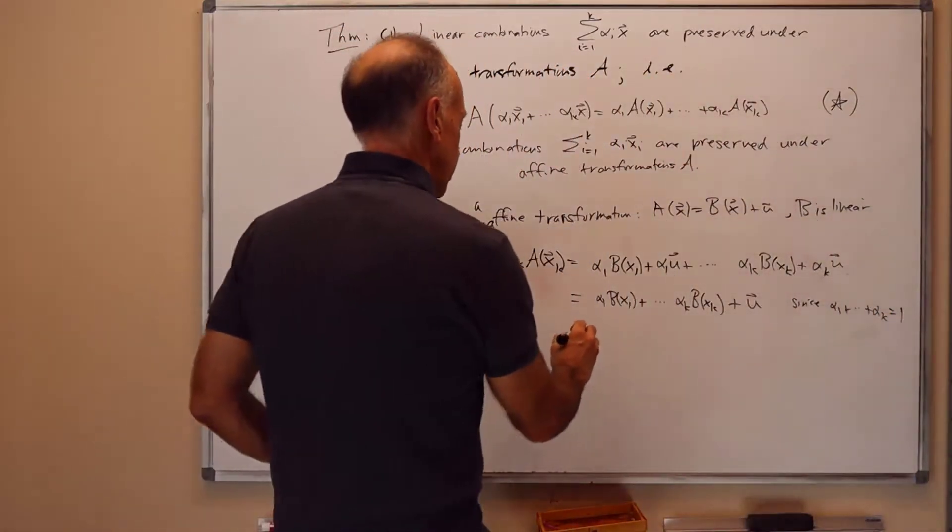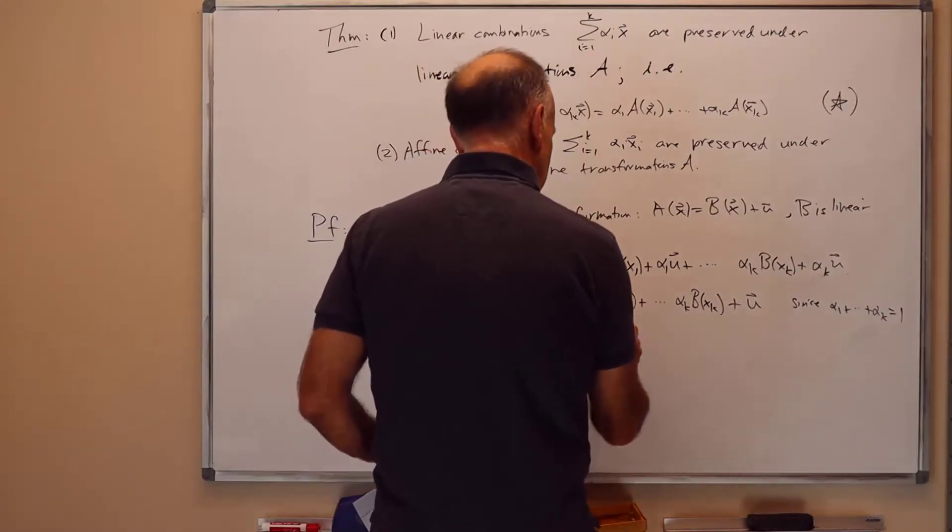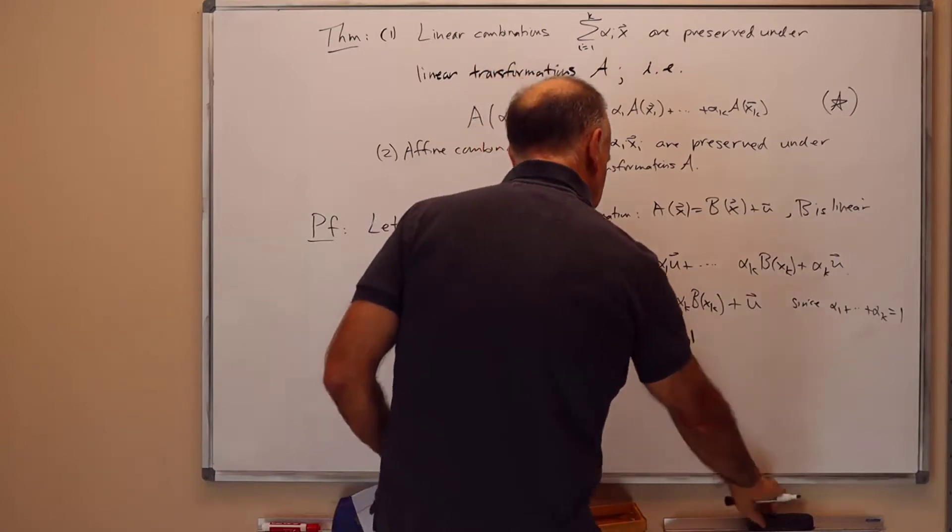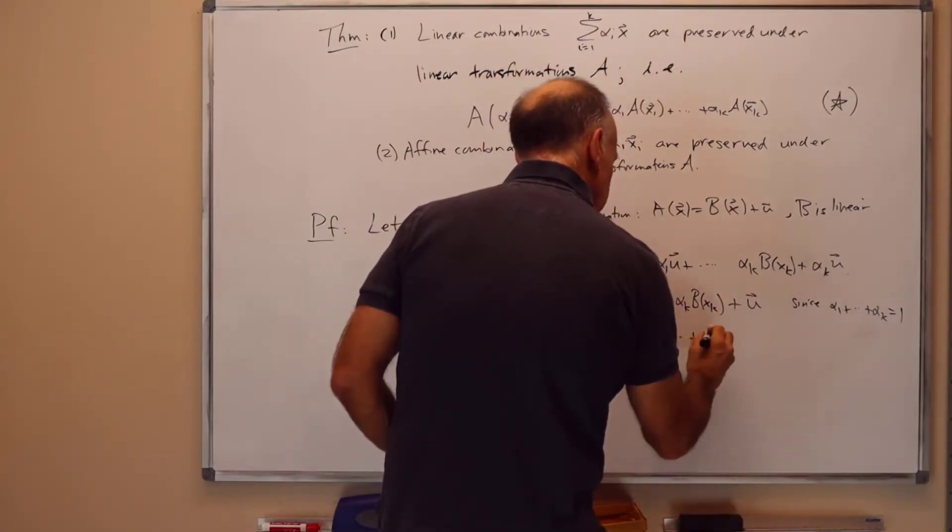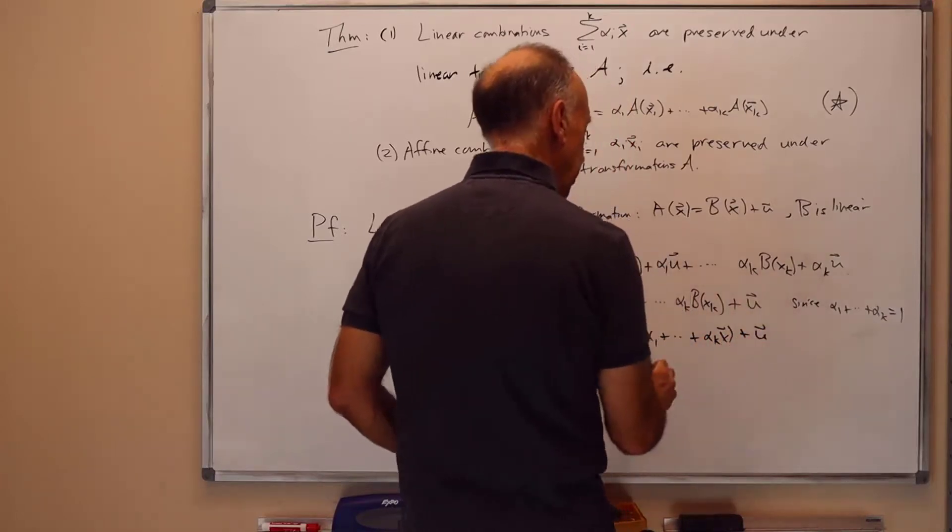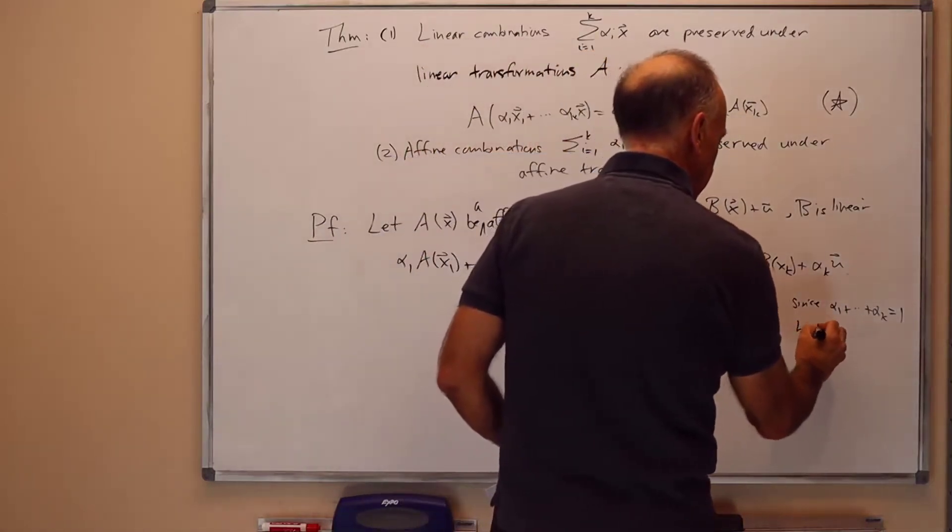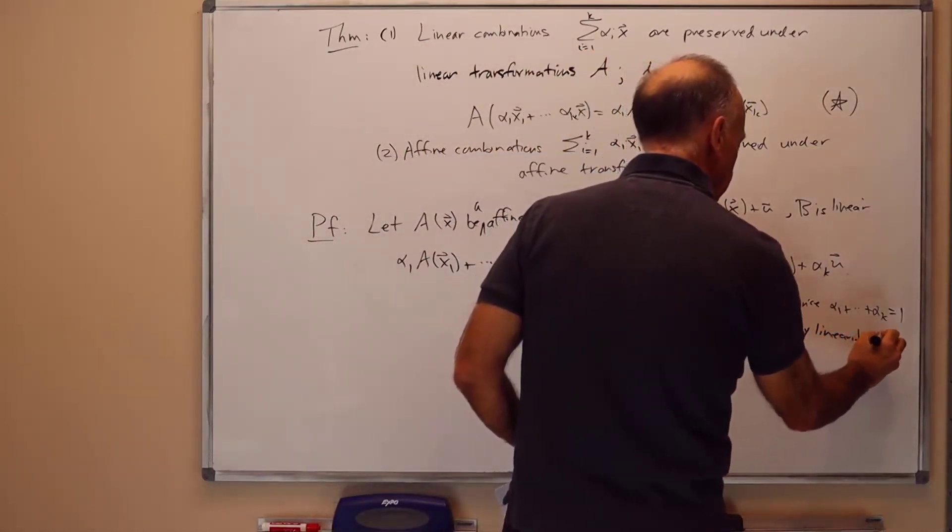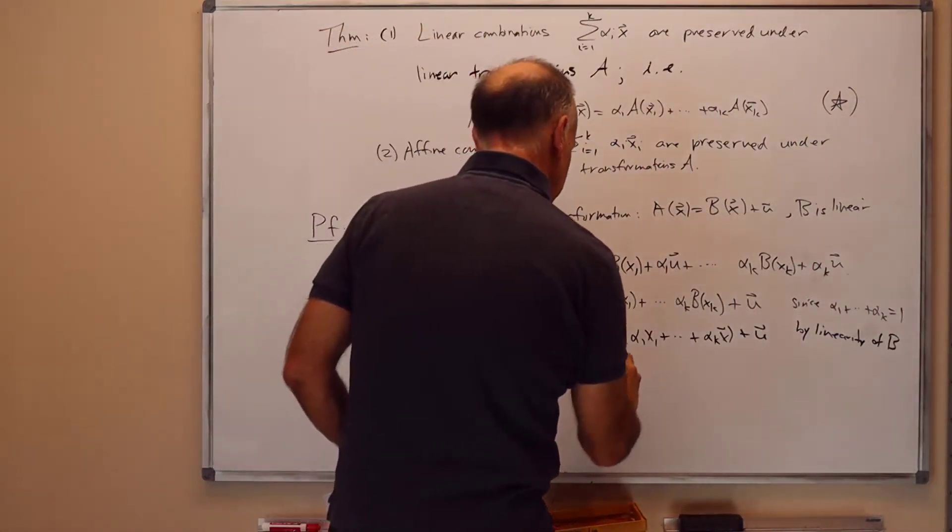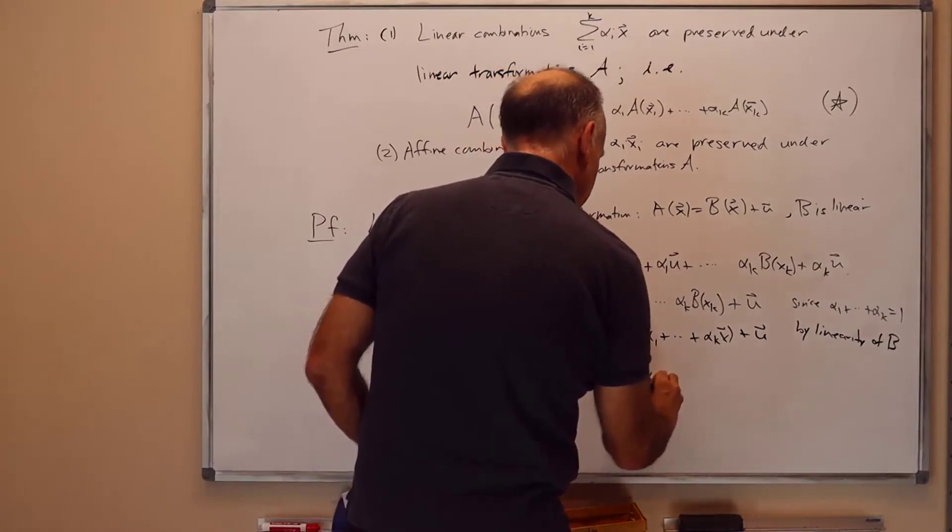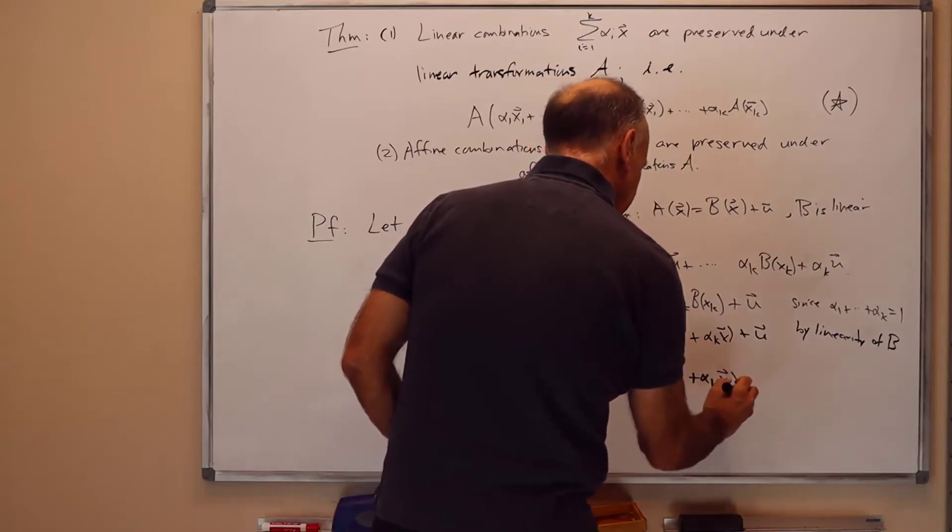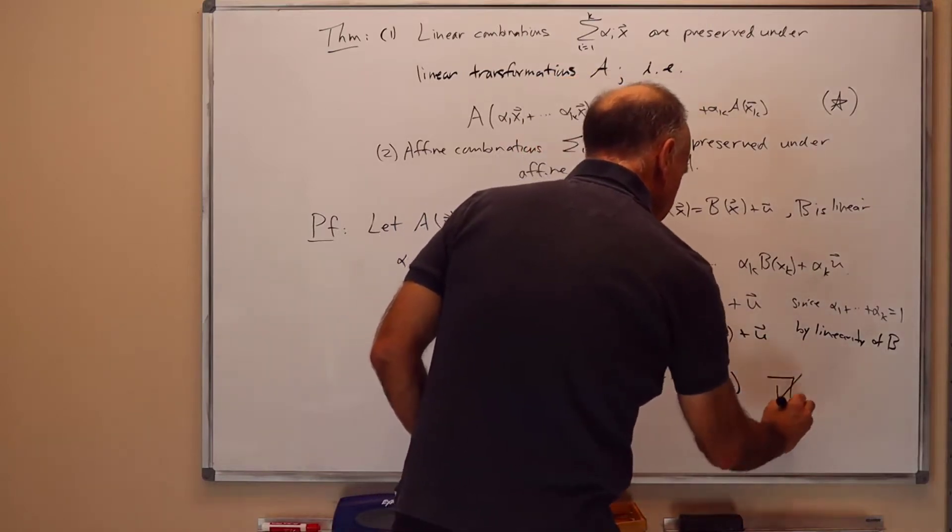And then this is equal to B of alpha 1 x1 plus dot dot dot alpha k xk plus u, again by the linearity of B or by part 1 of the theorem if you prefer. And that's equal to A of alpha 1 x1 plus dot dot dot alpha k xk as desired. And that proves the theorem.